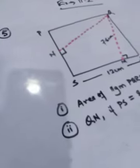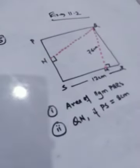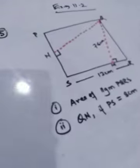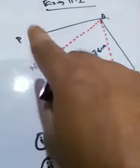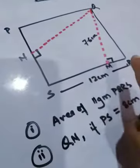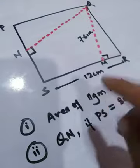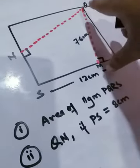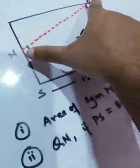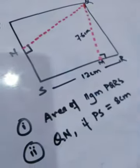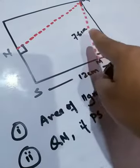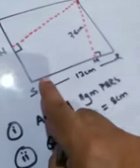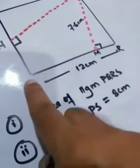In this session I will only explain question number five of exercise 11.2. In question number five, a figure is given which is a parallelogram, and the name of the parallelogram is PQRS. Inside the parallelogram, if you carefully observe, there are two heights given: the first height is QM and the other height is QN. The measurement of QM is given as 7.6 centimeters, and QM is perpendicular to side SR.